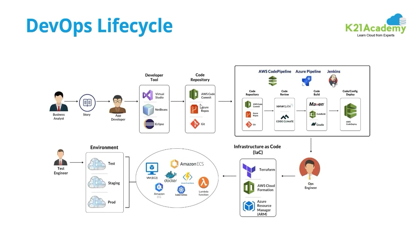The developer stores the code into a code repository — on AWS that's AWS CodeCommit, or maybe Git. Then using a CI/CD pipeline like Jenkins or Azure Pipelines — in the AWS case, AWS CodePipeline — you have CodeCommit, CodeReview, Testing, CodeBuild, and deployment using CodeDeploy.